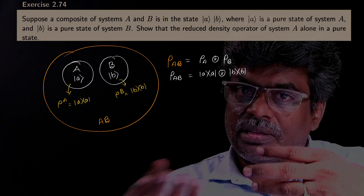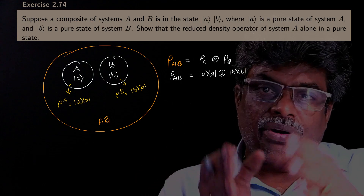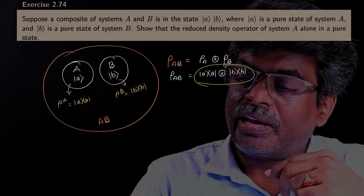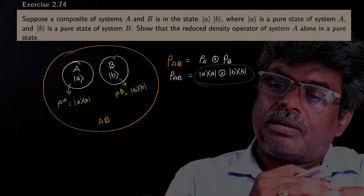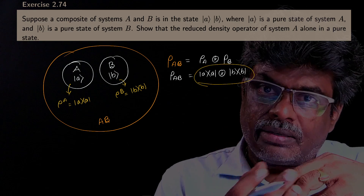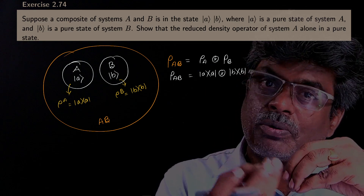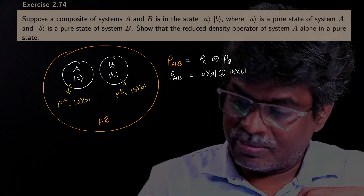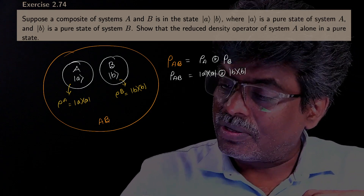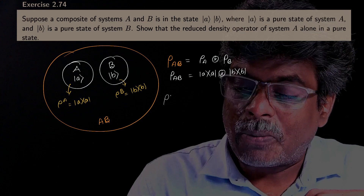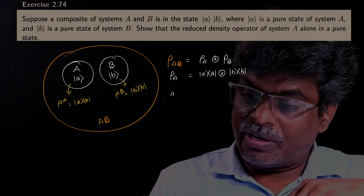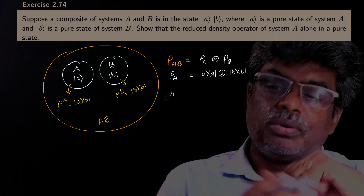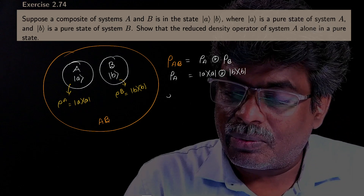Here, we already have the density operator corresponding to AB, that is ρ_AB equal to this one. We already have ρ_AB. But now we are going to find the density operator corresponding to system A alone. Let it be ρ_A.